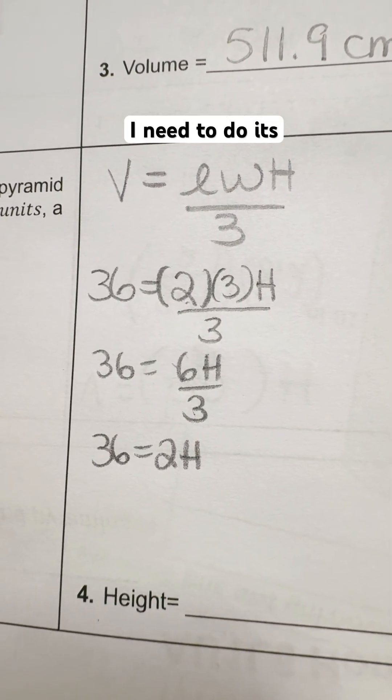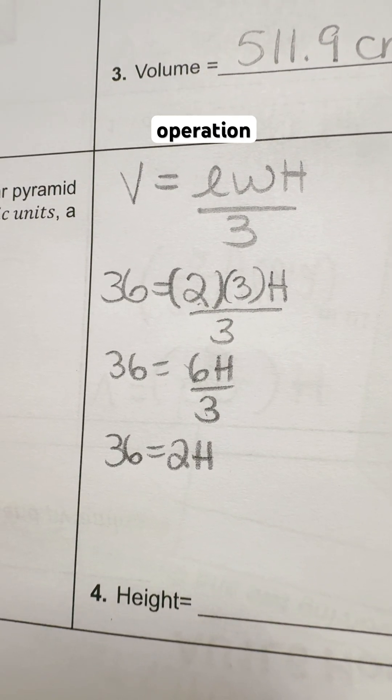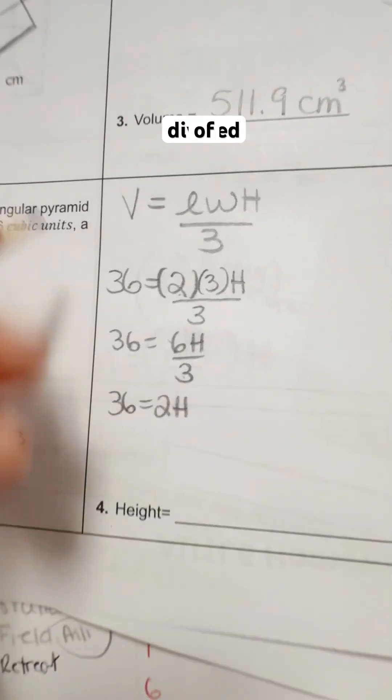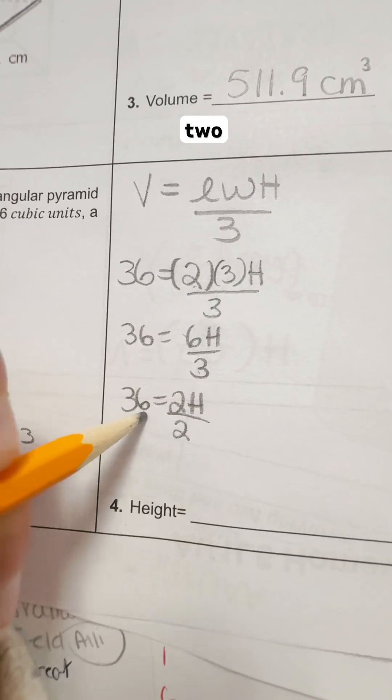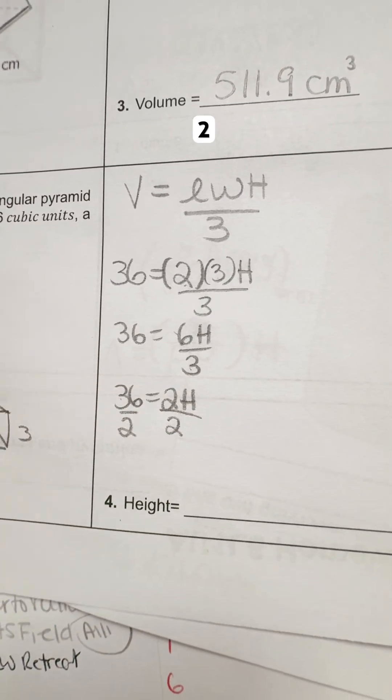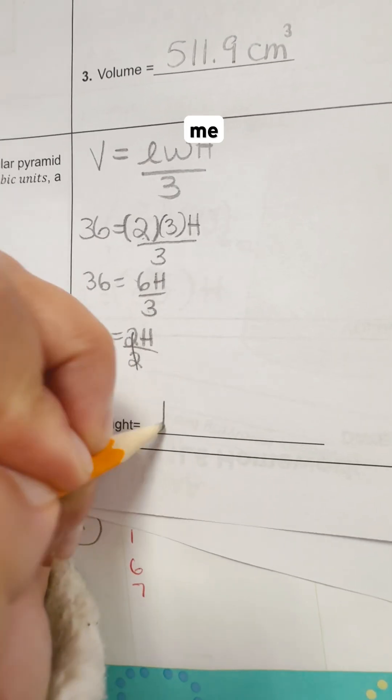And if I want to get H by itself, I need to do its opposite operation. Opposite operation of multiplication, of course, is to divide by 2. And 36 divided by 2 gets me 18.